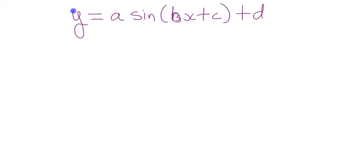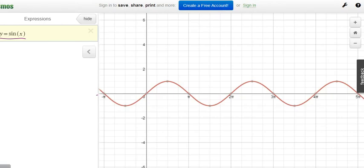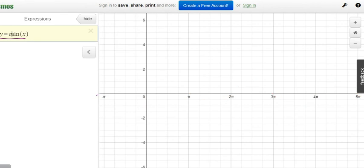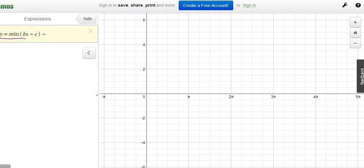We're going to write this equation in and play with a, b, c, and d. In Desmos, we add sliders for each of them. We start with a=1, b=1, c=0, d=0 — so this function is the same as y=sin(x) that we just looked at.